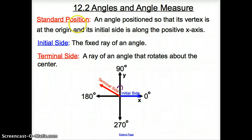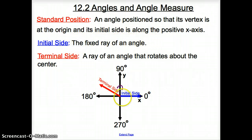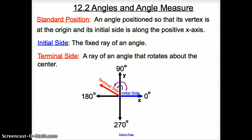First vocab word is standard position. Standard position is an angle position so that its vertex is at the origin and its initial side is along the positive x-axis. Here we have the initial side positioned along the x-axis. The initial side is the fixed ray of an angle. Then we have the terminal side, which is a ray of an angle that rotates about the center. The terminal side is rotating about the center, and the center is at the origin.